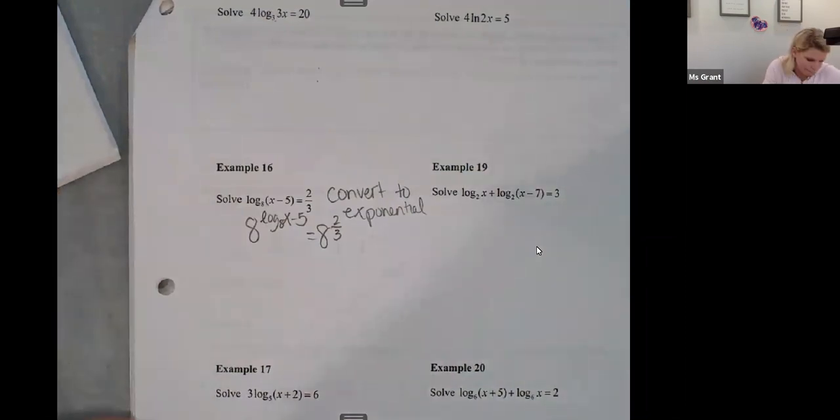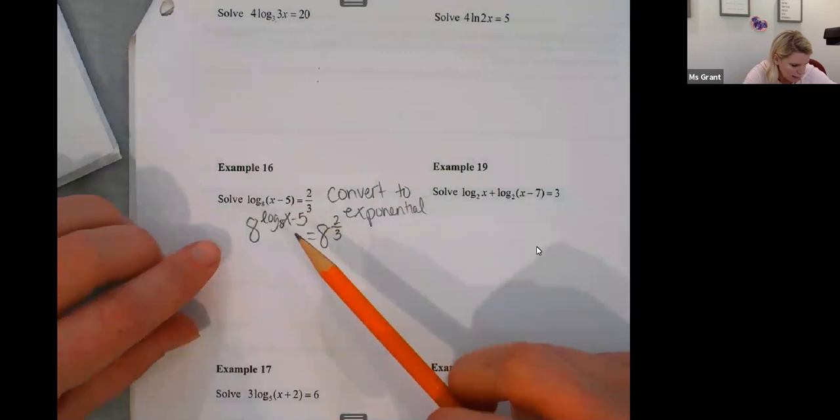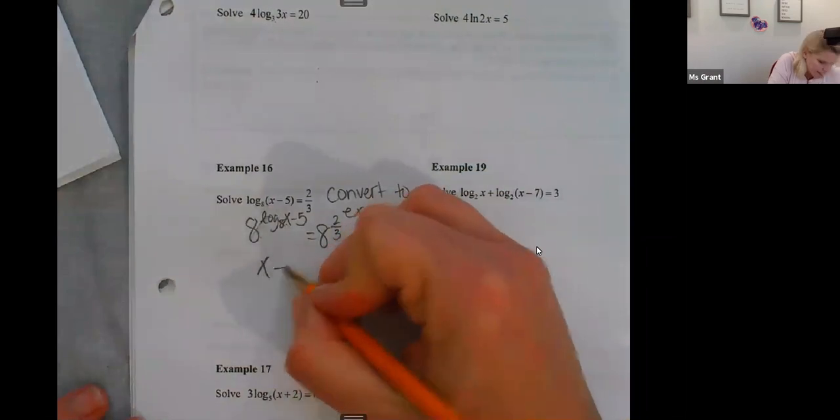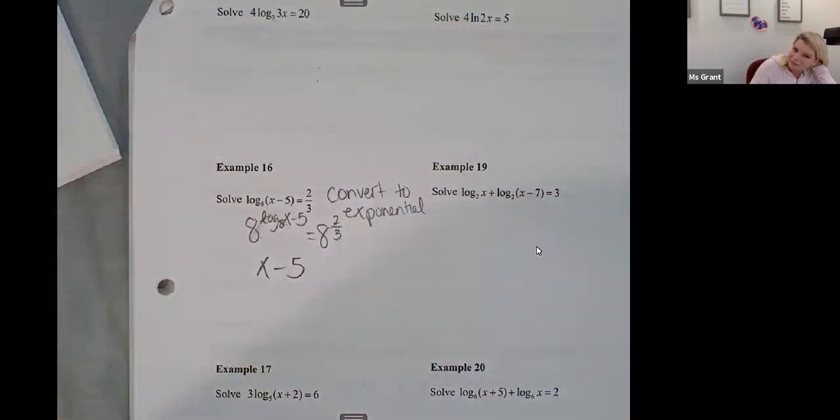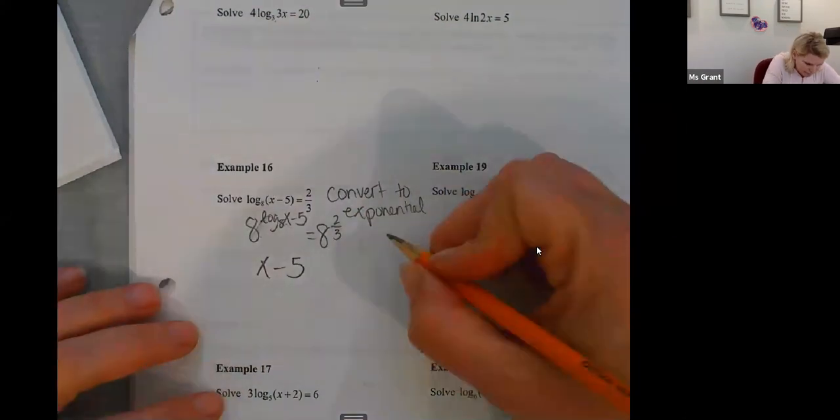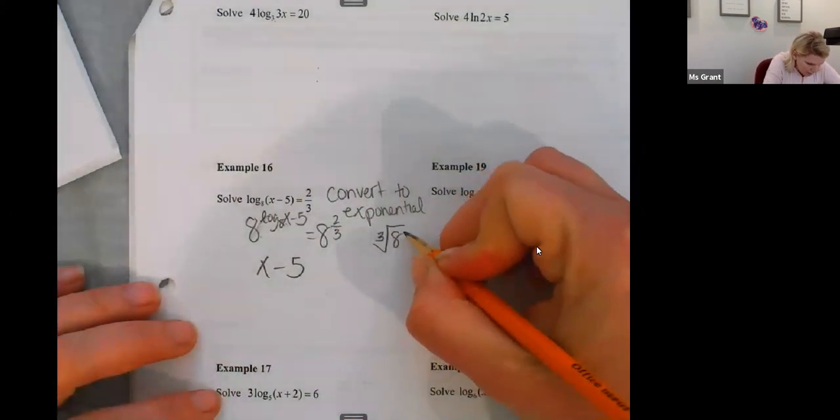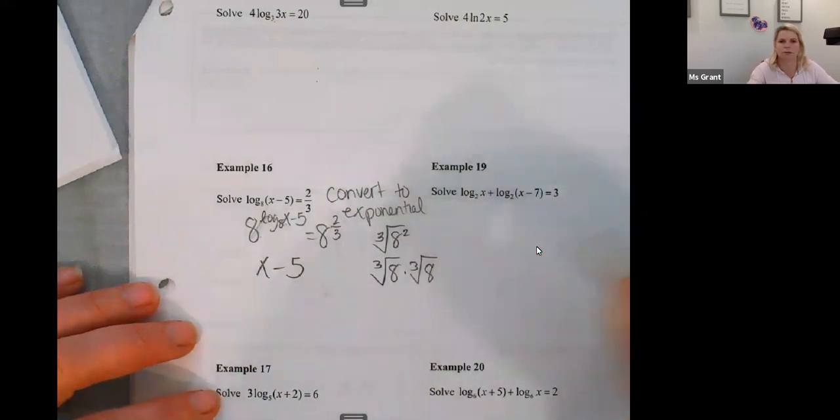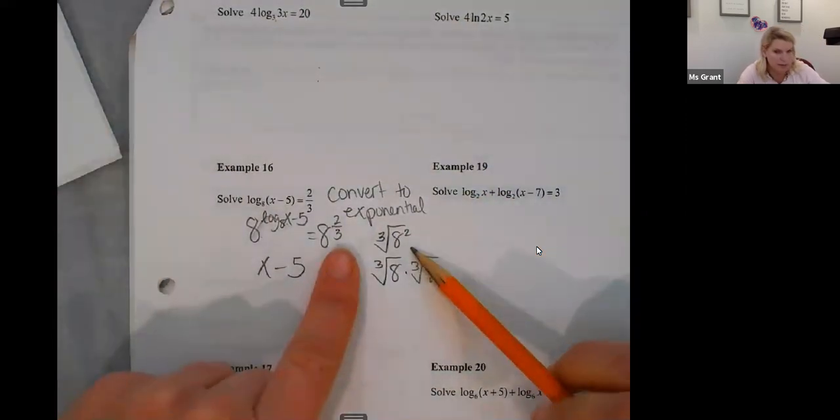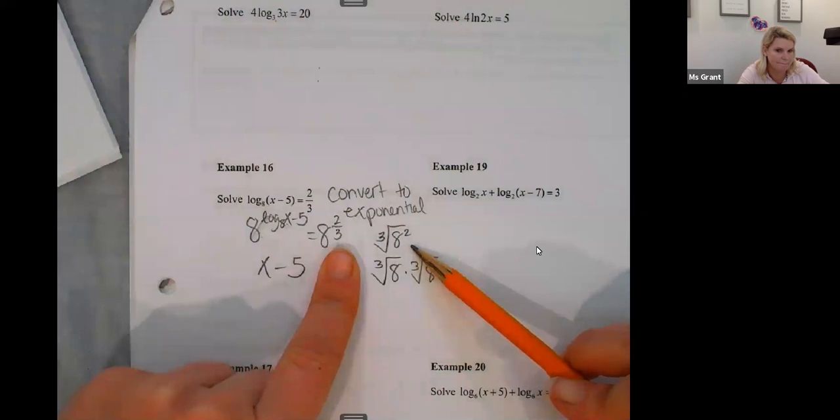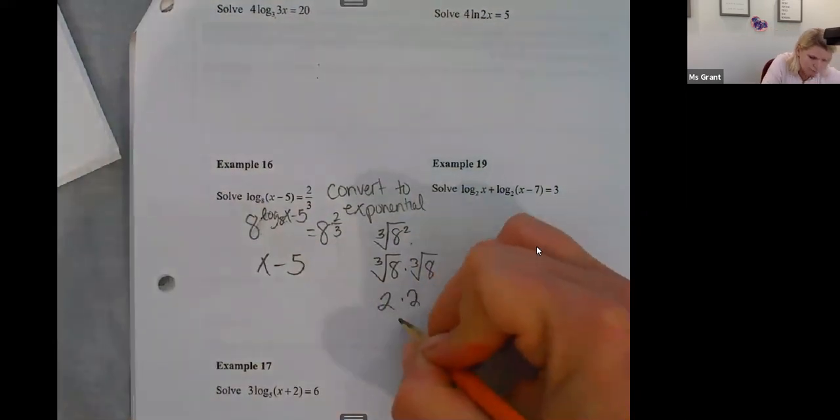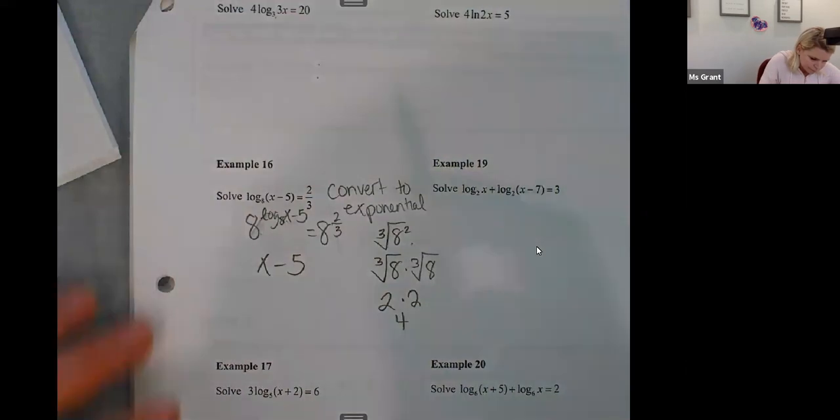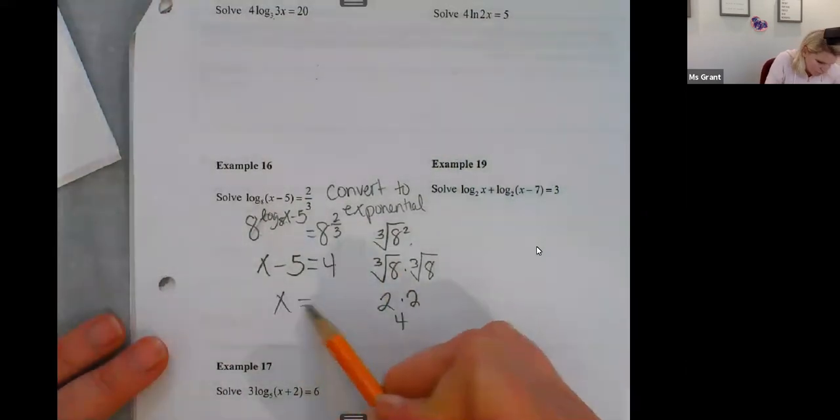Okay. Now remember our logarithm rule. Eight raised to the power of log base eight. That all cancels. All I have is an x minus five. Then eight to the two thirds. It's like the cubed root of eight squared or like the cubed root of eight times the cubed root of eight. Right. Remember how to do this. Don't forget. Okay. Two times two. Four. And x minus five equals four. X equals nine.